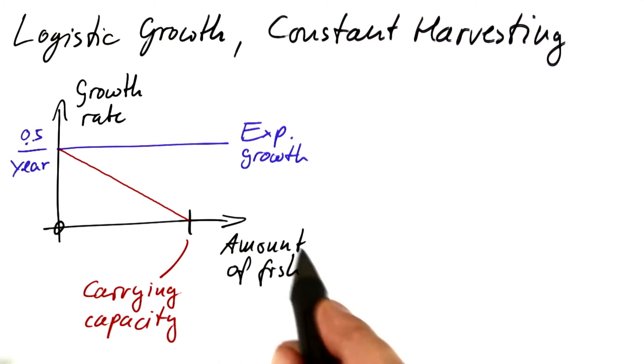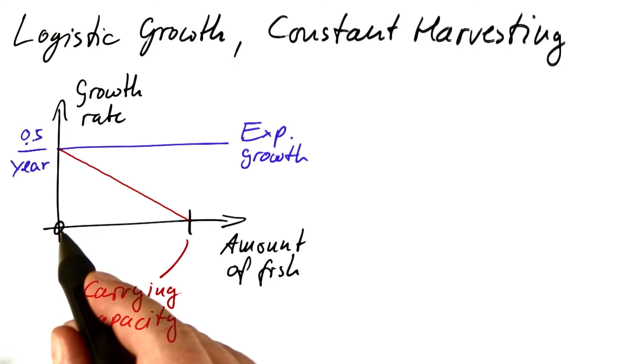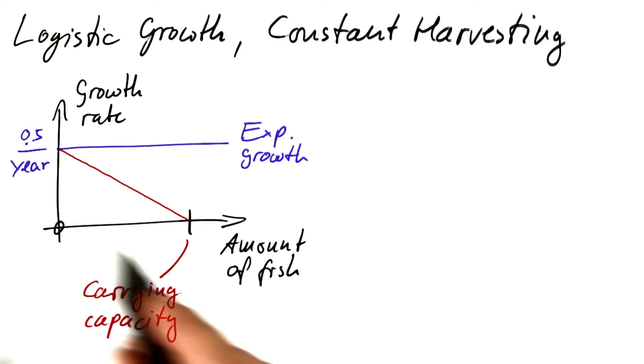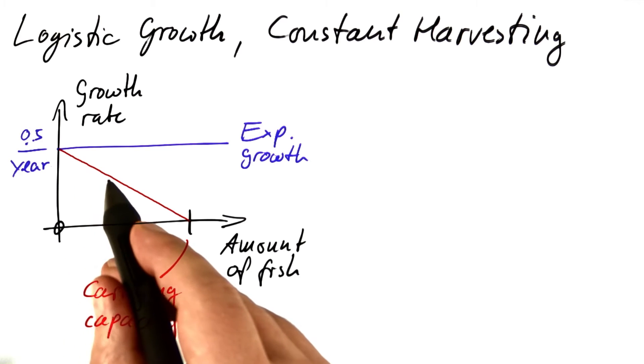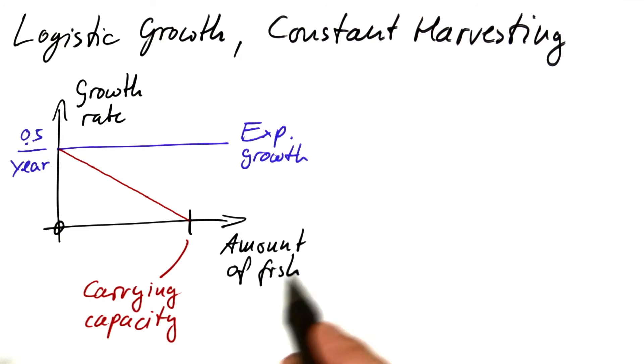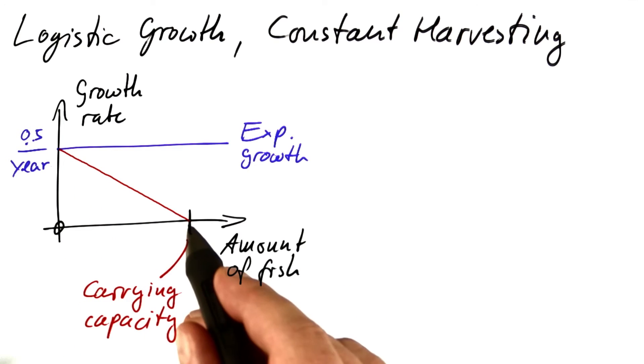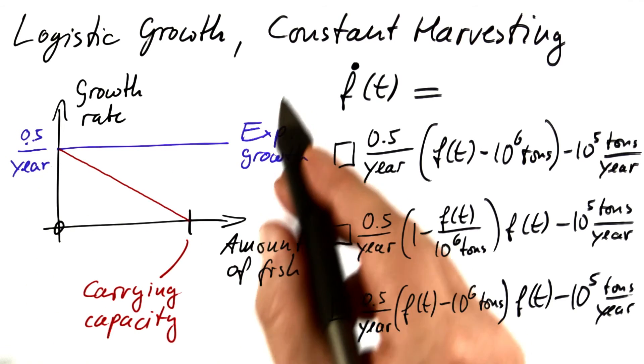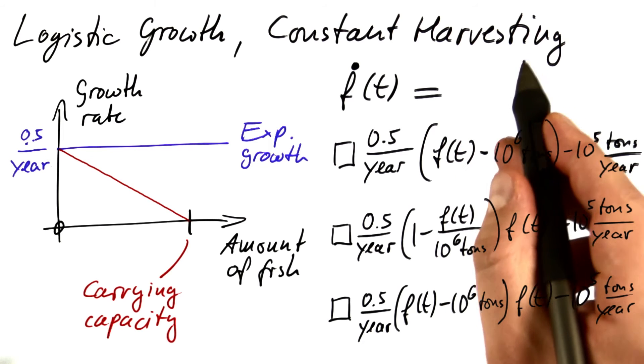If the amount of fish is very small, we start with a high growth rate, and as the amount of fish increases, the growth rate drops. And if the amount of fish reaches the carrying capacity of the environment, there won't be any growth anymore. How do we turn this effect plus constant harvesting into an equation?